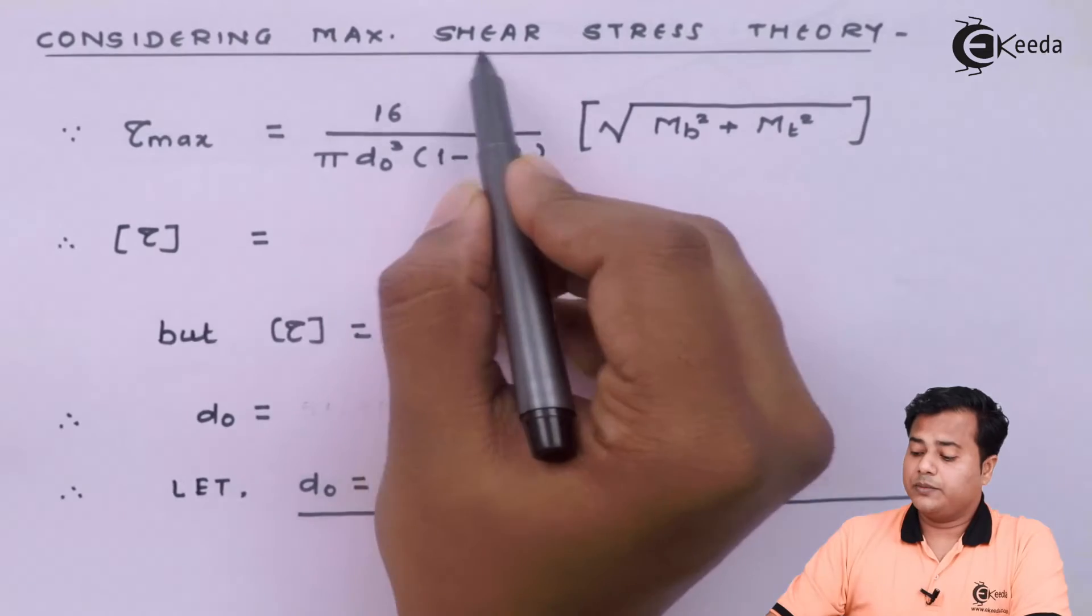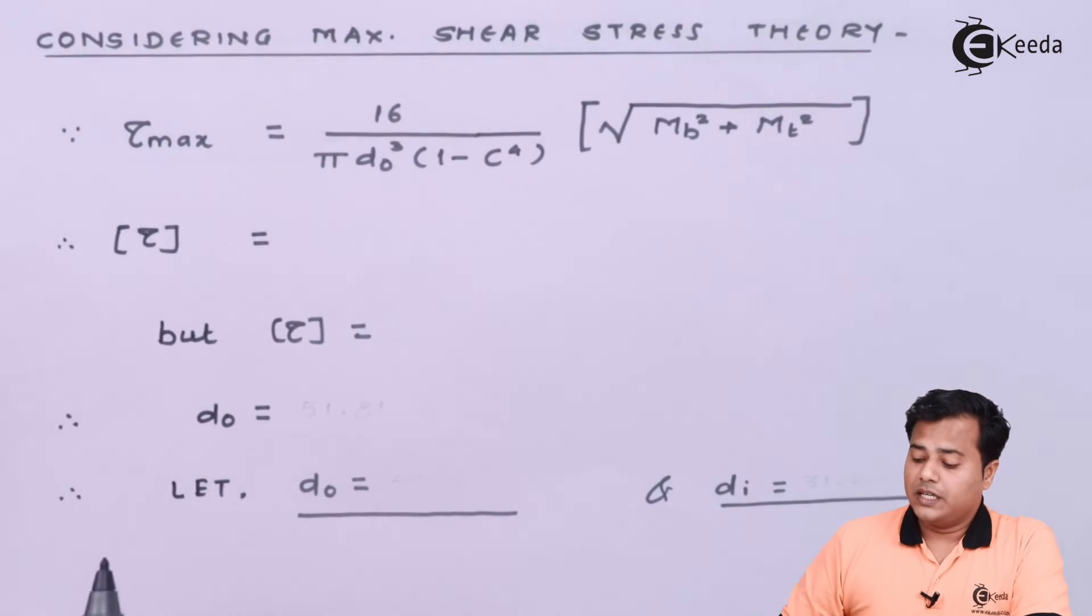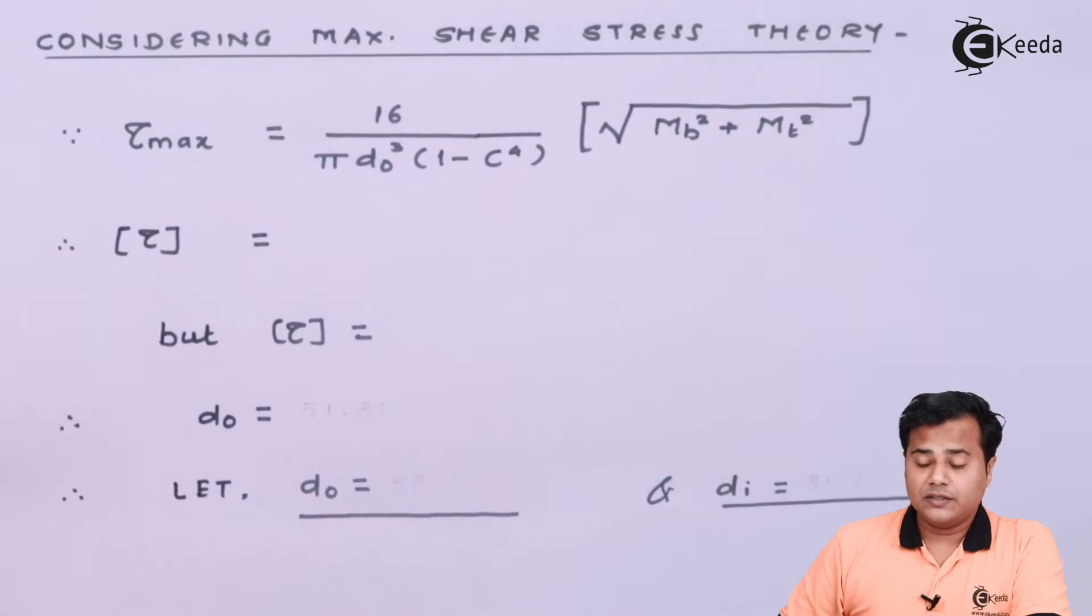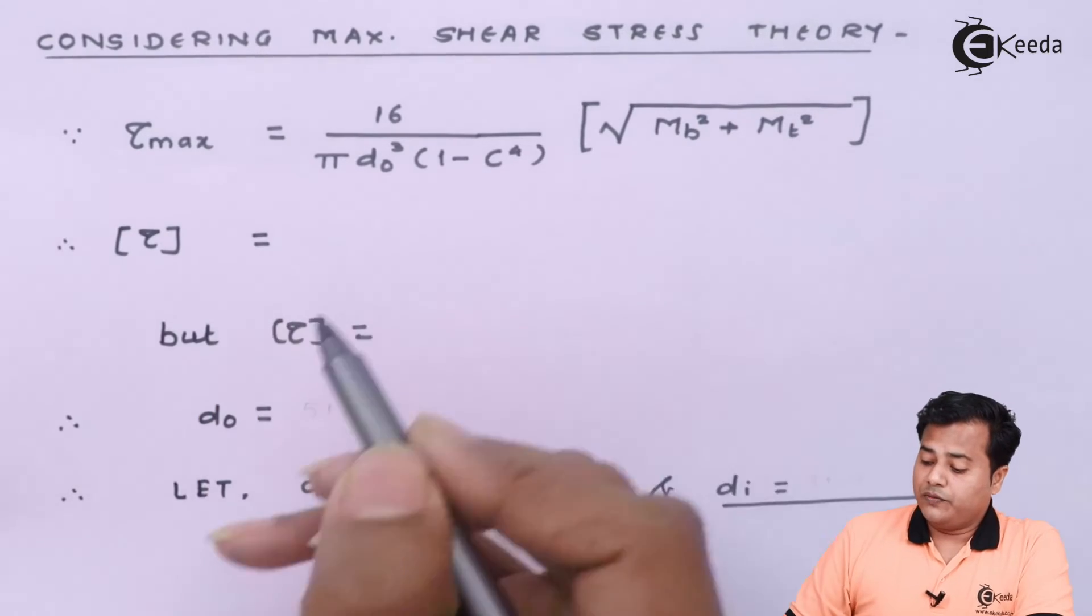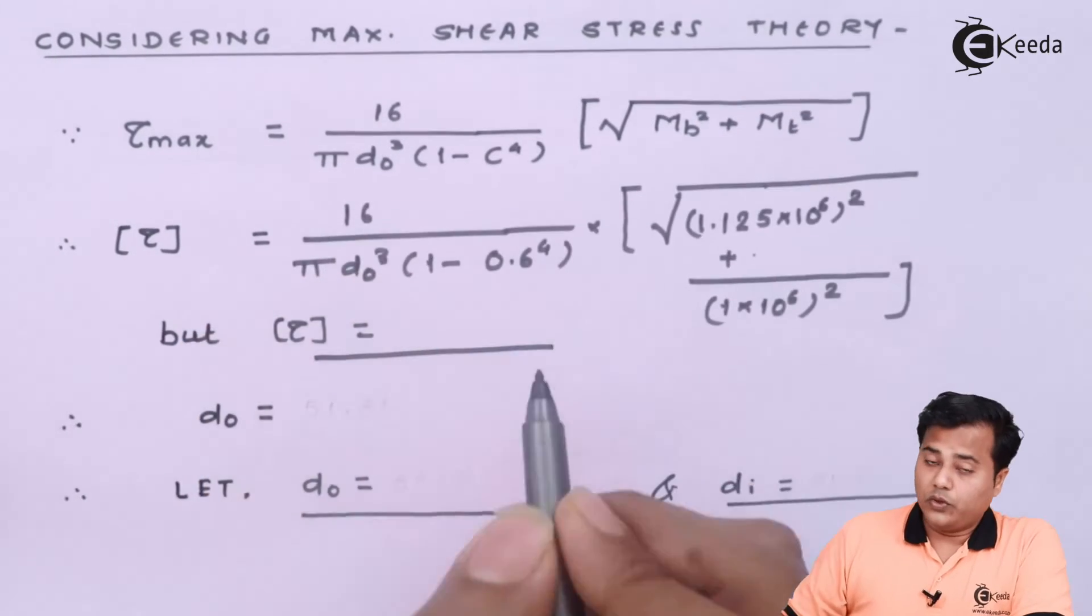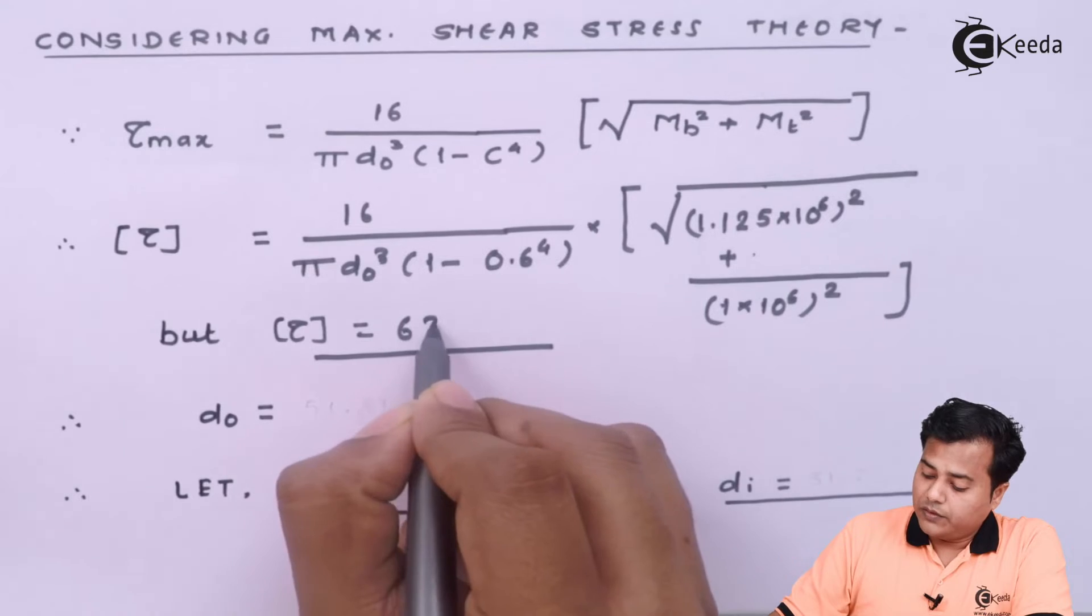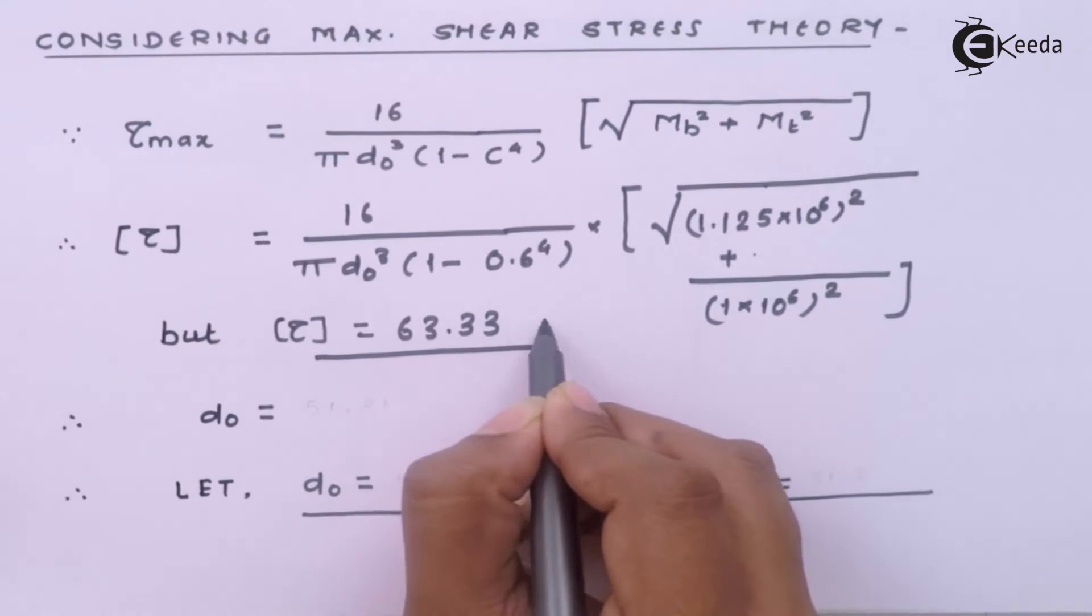Let us move ahead and considering maximum shear stress theory for the given case we have this expression with us where we can substitute the formulae, but we already know that the allowable value is somewhere around 63.33 newton per millimetre square.